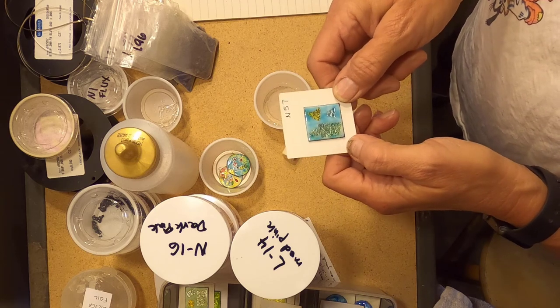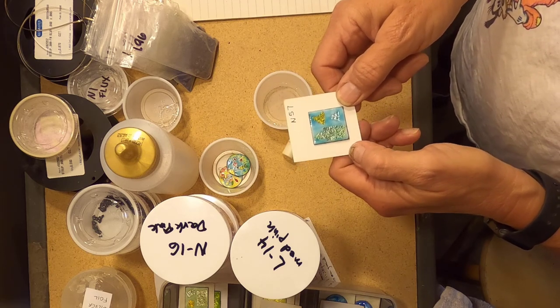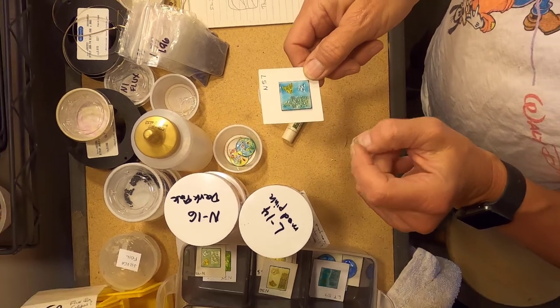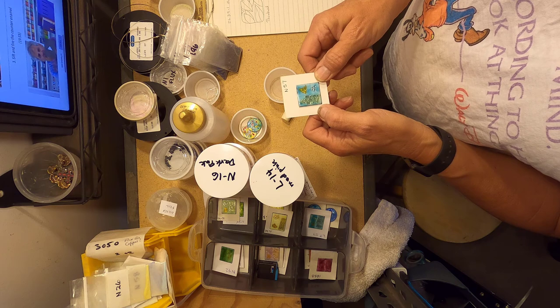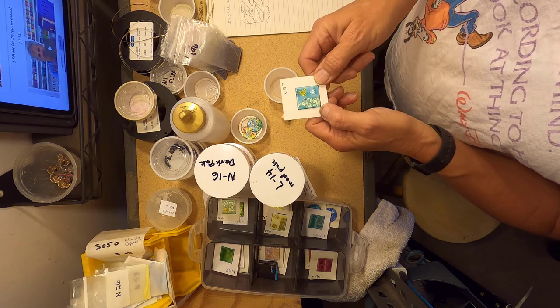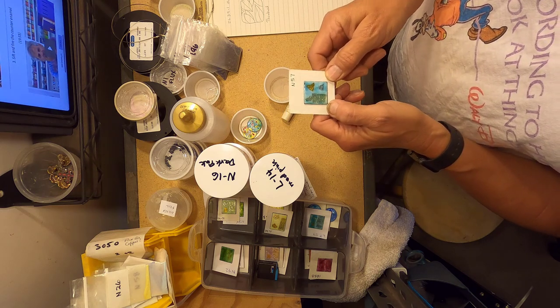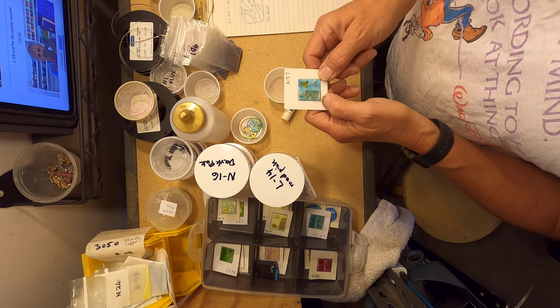Enamel does not work like paint. Paint may dry a tiny bit lighter or darker than it looks when it's wet. But enamel is often a completely different color before it's cooked to when it's after cooked.